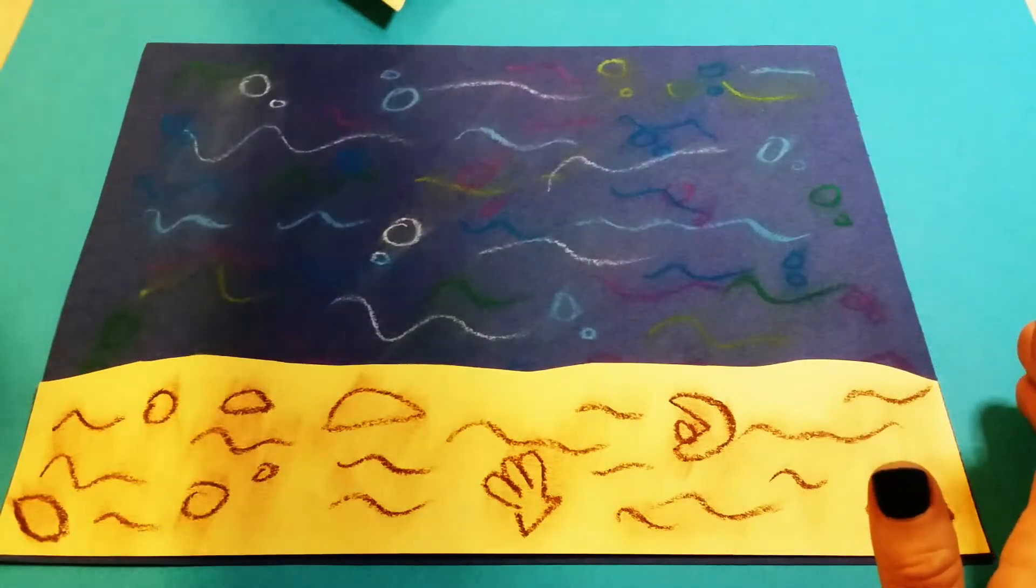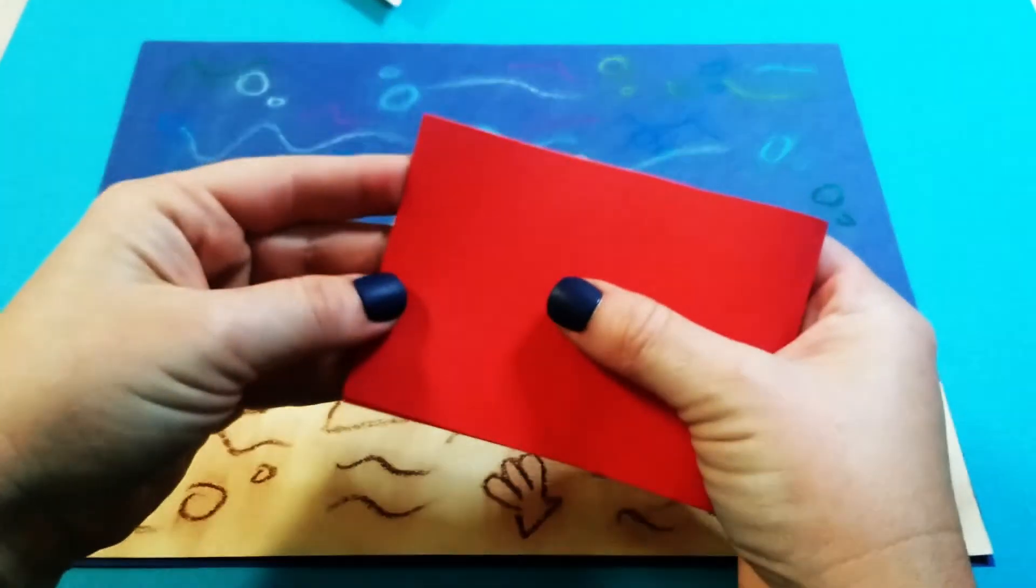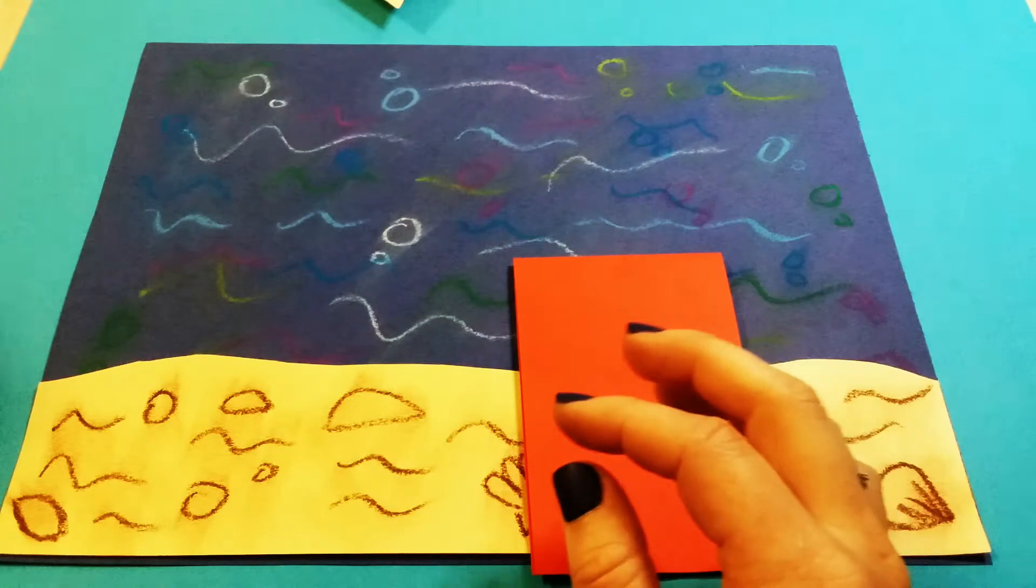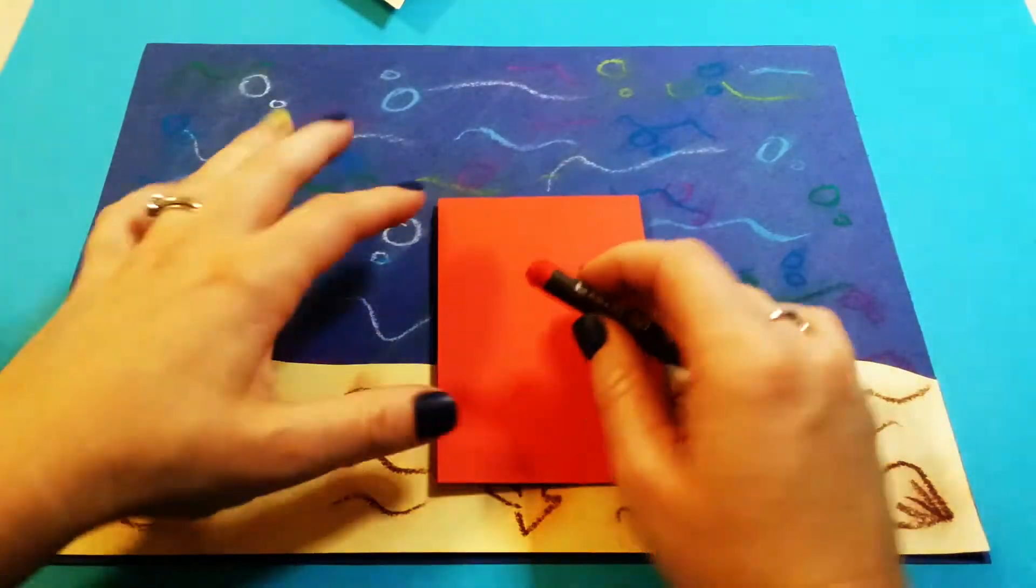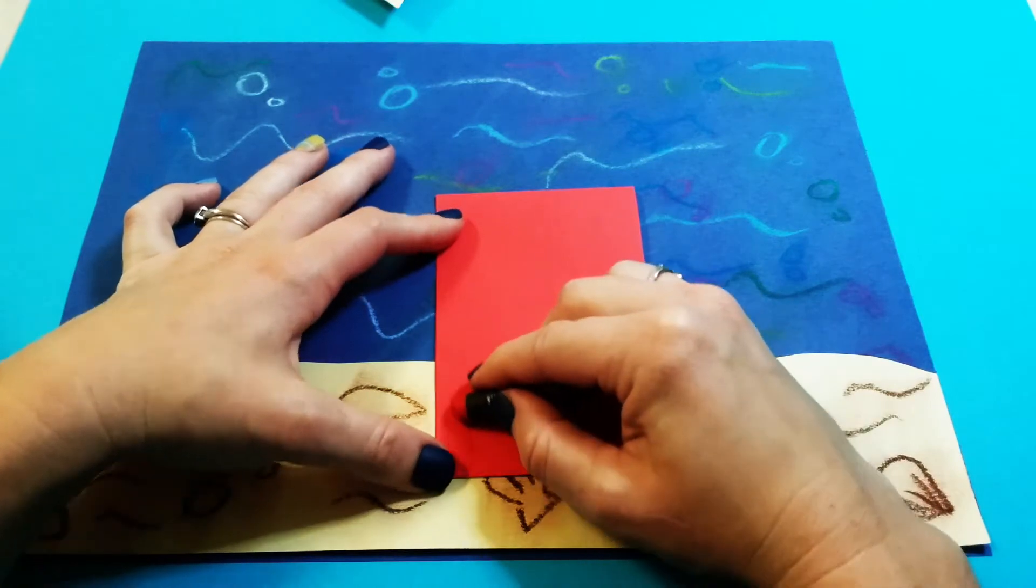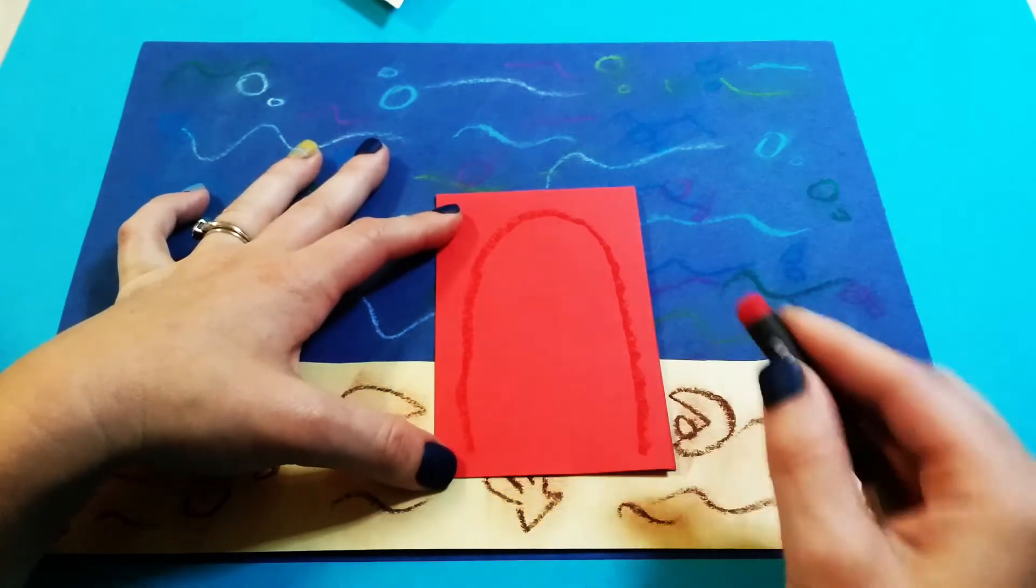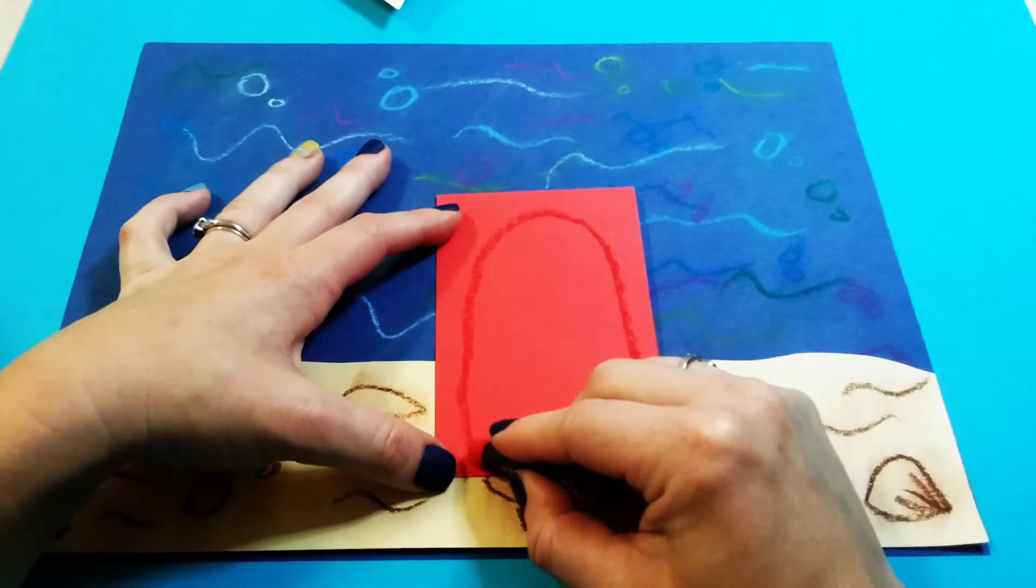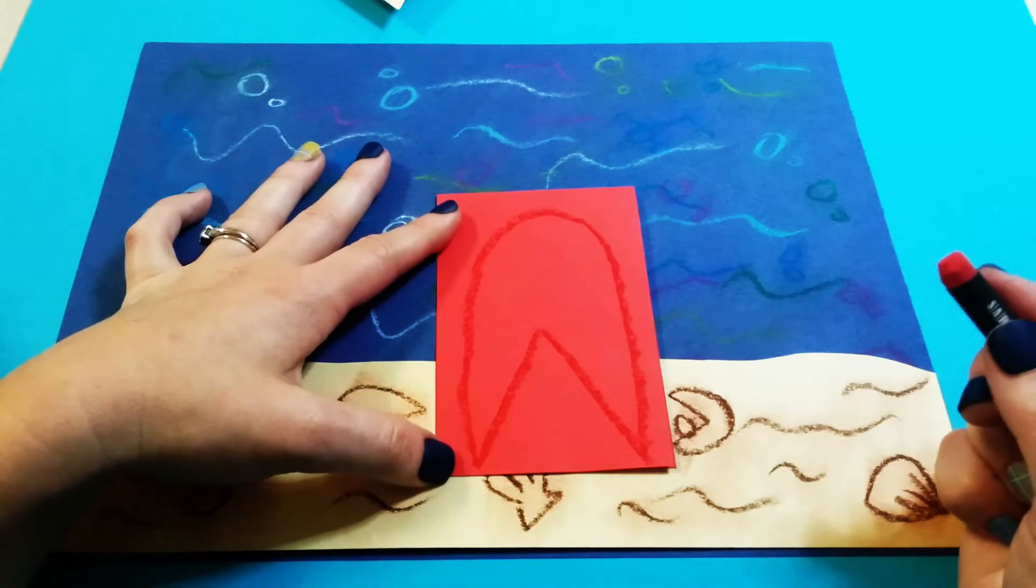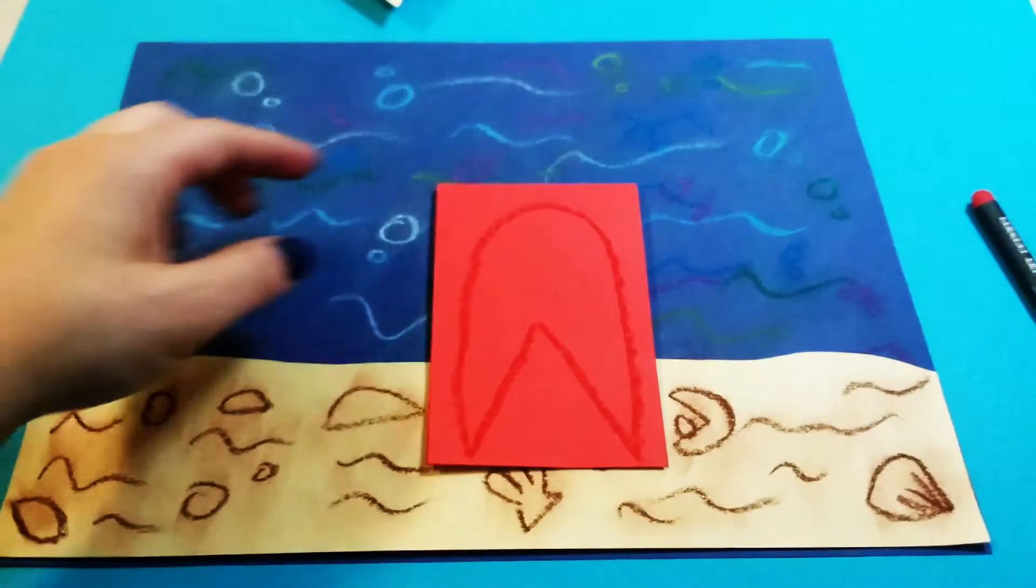So next what you're going to do is get a strip of red paper and I want you to start by folding it in half, and you can use a red oil pastel for this. What we're going to do is draw a big rainbow line and then at the bottom of the rainbow line you're going to come up and down like an upside down V, and then we can get our scissors and cut it out.